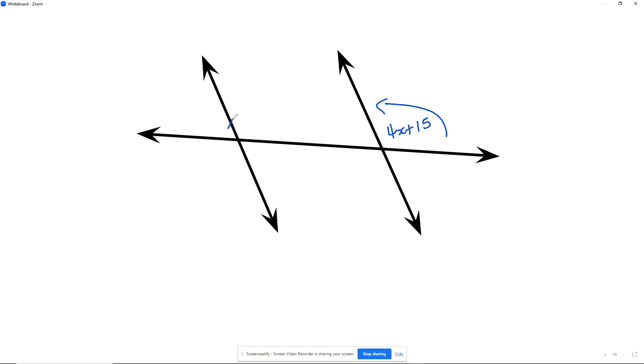And I know this is parallel to that, and this is 5x minus 10. The first thing is, this is given as AB and this is given as CD, and we're asked to find the value of x.